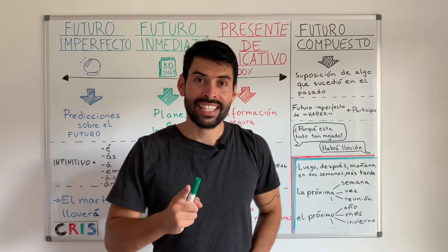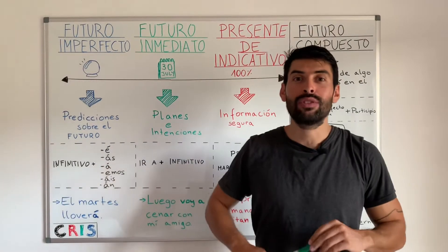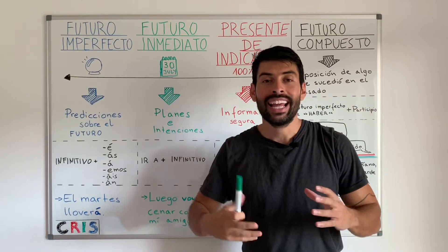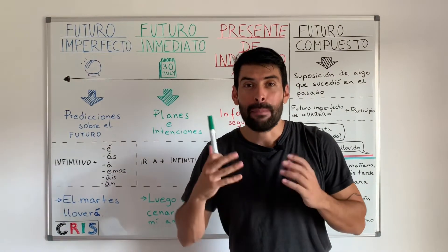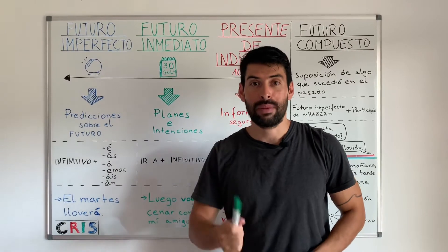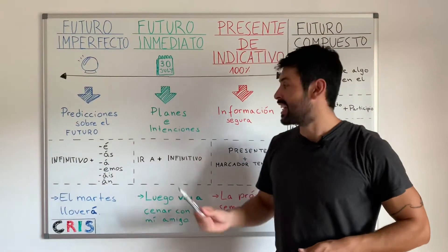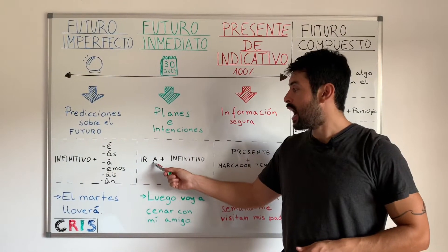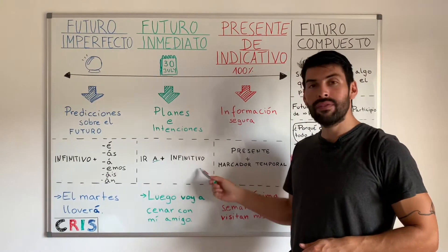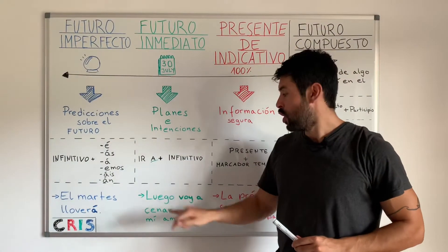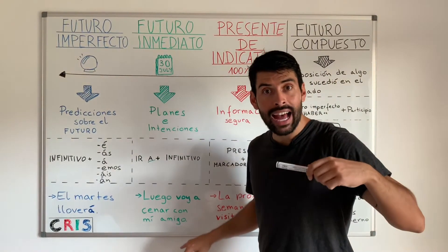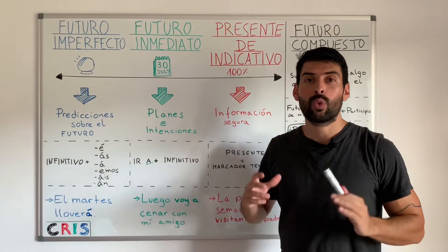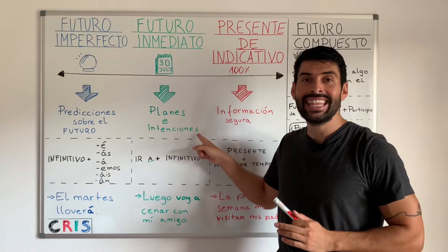De seguro tú comenzaste a hablar del futuro utilizando el futuro inmediato o próximo, el cual es el más fácil de aprender cuando tú estás dando los primeros pasos en español. Tú utilizas el verbo IR conjugado más la preposición A y un infinitivo. En este ejemplo tenemos: luego de esta clase voy a comer con mi amigo Tobal. Este futuro lo utilizamos cuando hablamos de planes e intenciones.